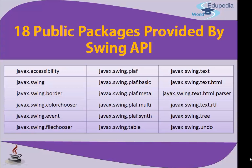javax.swing.text.html and javax.swing.text.html.parser handle HTML content. The next one is javax.swing.text.rtf, where RTF stands for Rich Text Format. The plain text package holds simple unformatted text, while Rich Text Format supports full text formatting. If you want a rich text format box it will be supported accordingly. Then javax.swing.tree handles tree structures.